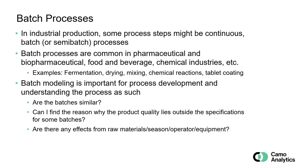Batch processes are one of several types of processes that we encounter in industry. We have continuous processes and also semi-batch processes, and they are quite common in pharmaceutical industries, food and beverage, chemical industries, and so on. Some examples are fermentation, drying, mixing, chemical reactions, and tablet coating. Modeling batch processes is important for process development, also by help of design of experiments, and also to understand the process as such — for example, are the batches similar, and can I find the reason why the product quality falls outside the specifications for some batches? Are there any effects from raw materials, season, operator, or equipment?